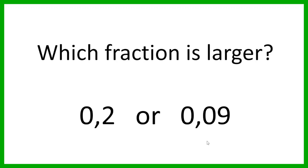So first of all, just be careful — just because 0.09 has a 9 in it, which is normally bigger than a 2, you can't automatically assume that this fraction is going to have a greater value than that fraction. We need to look at their place values.